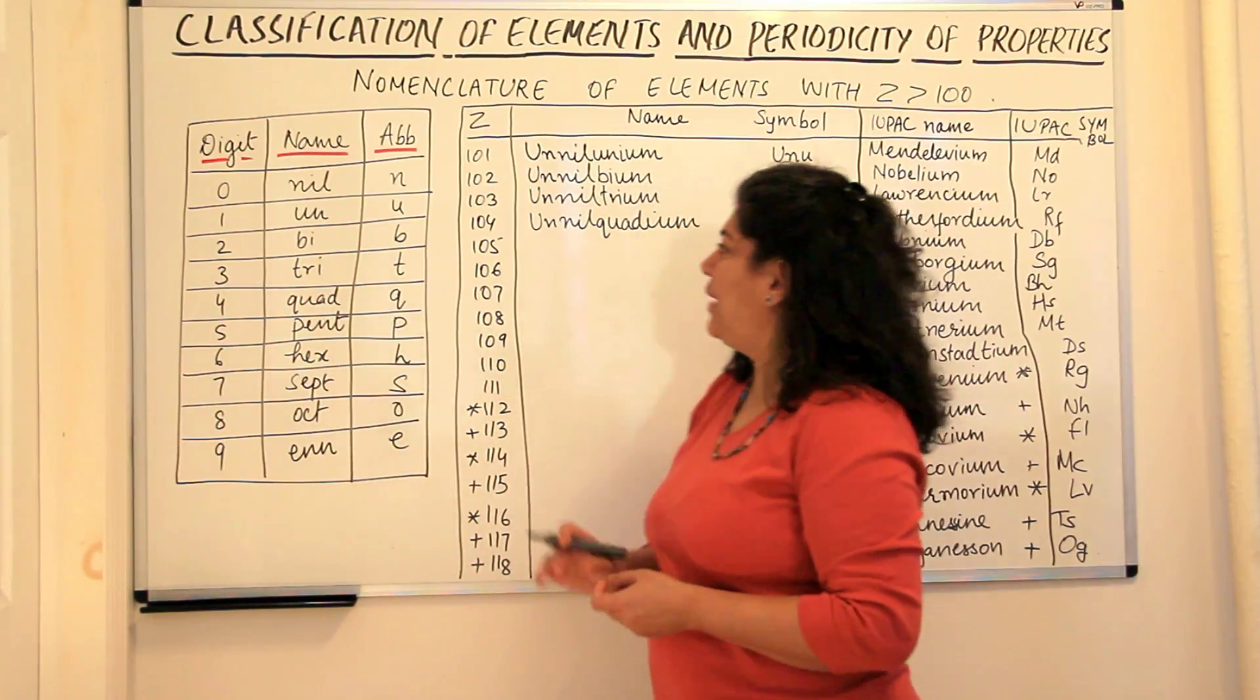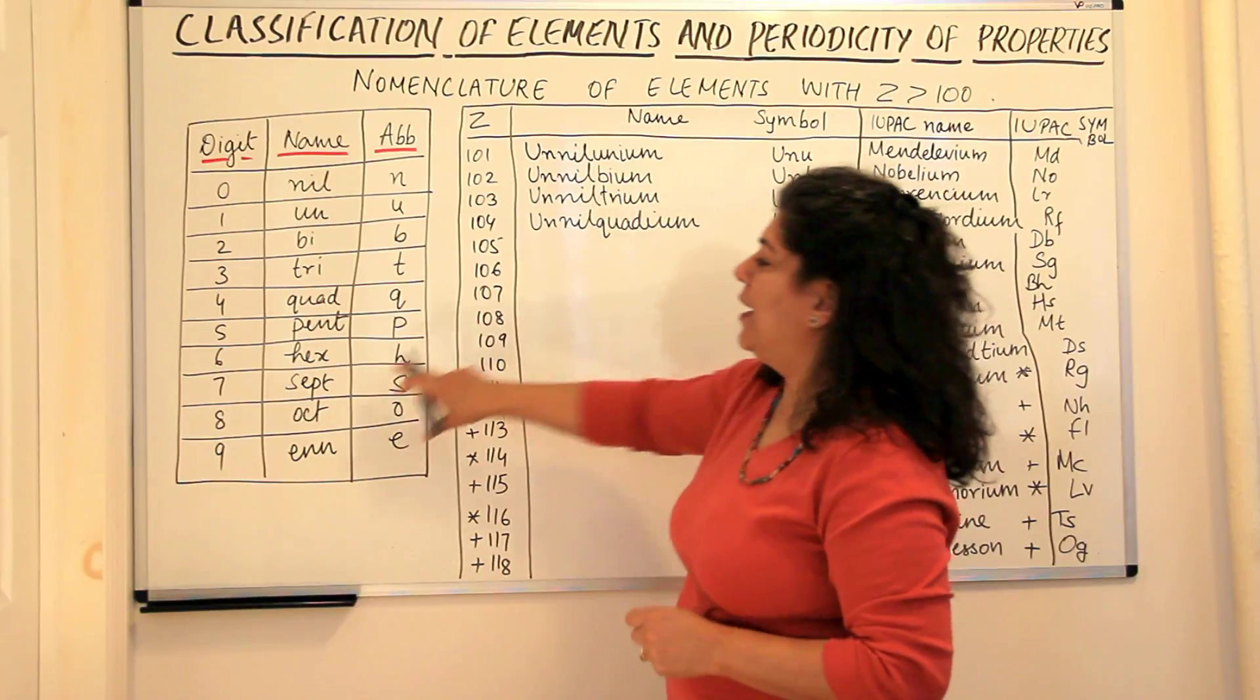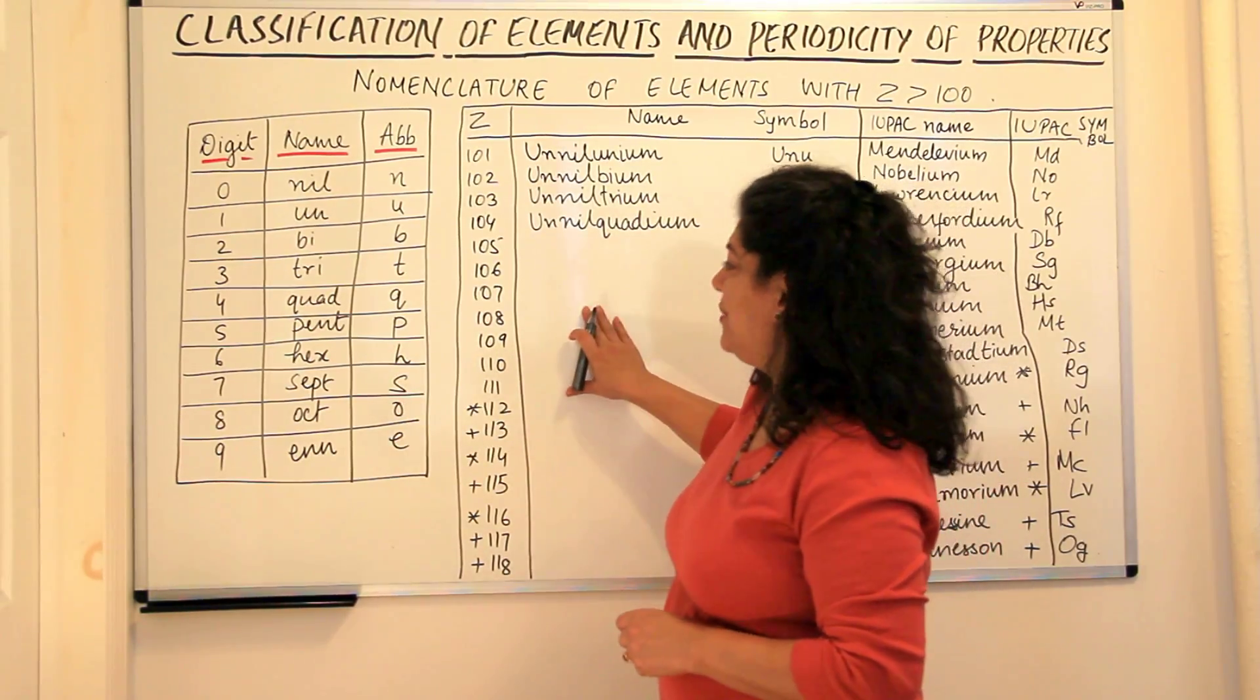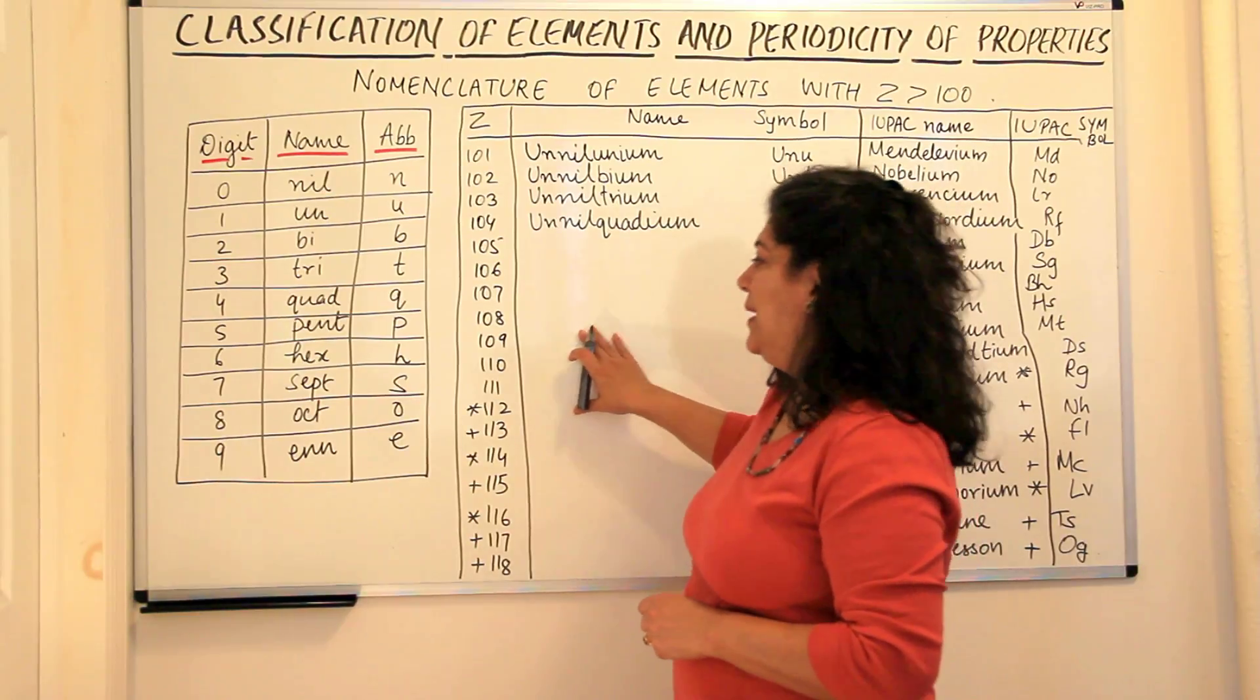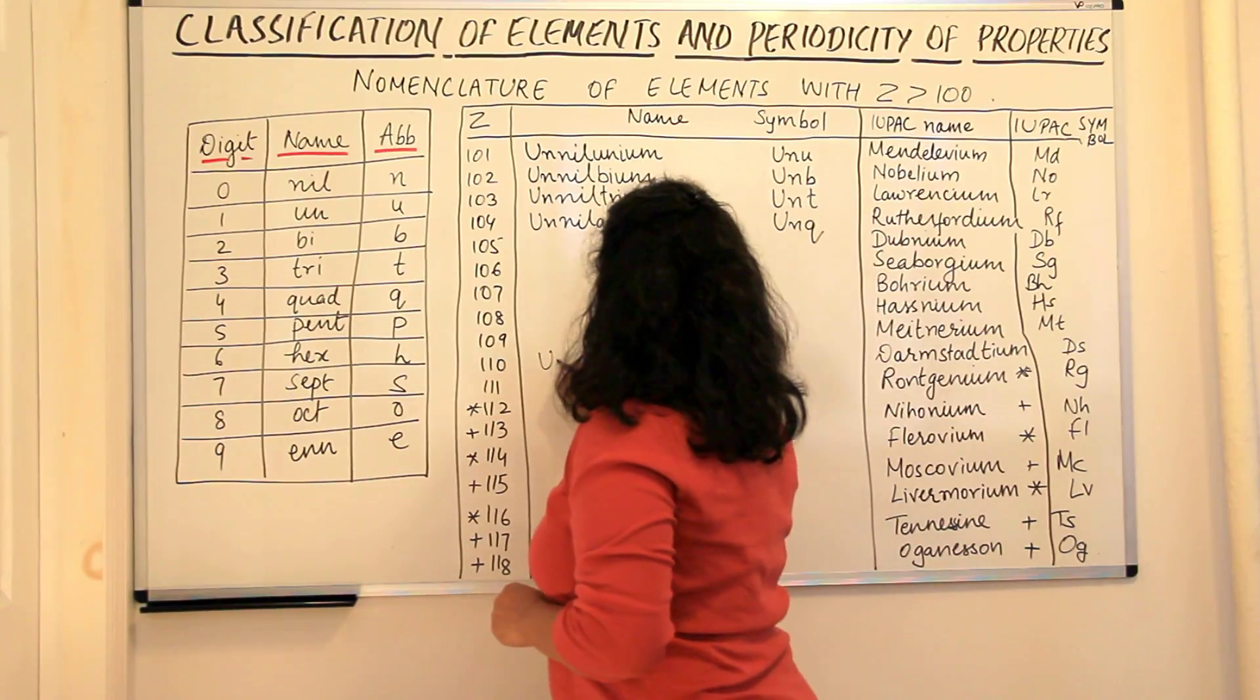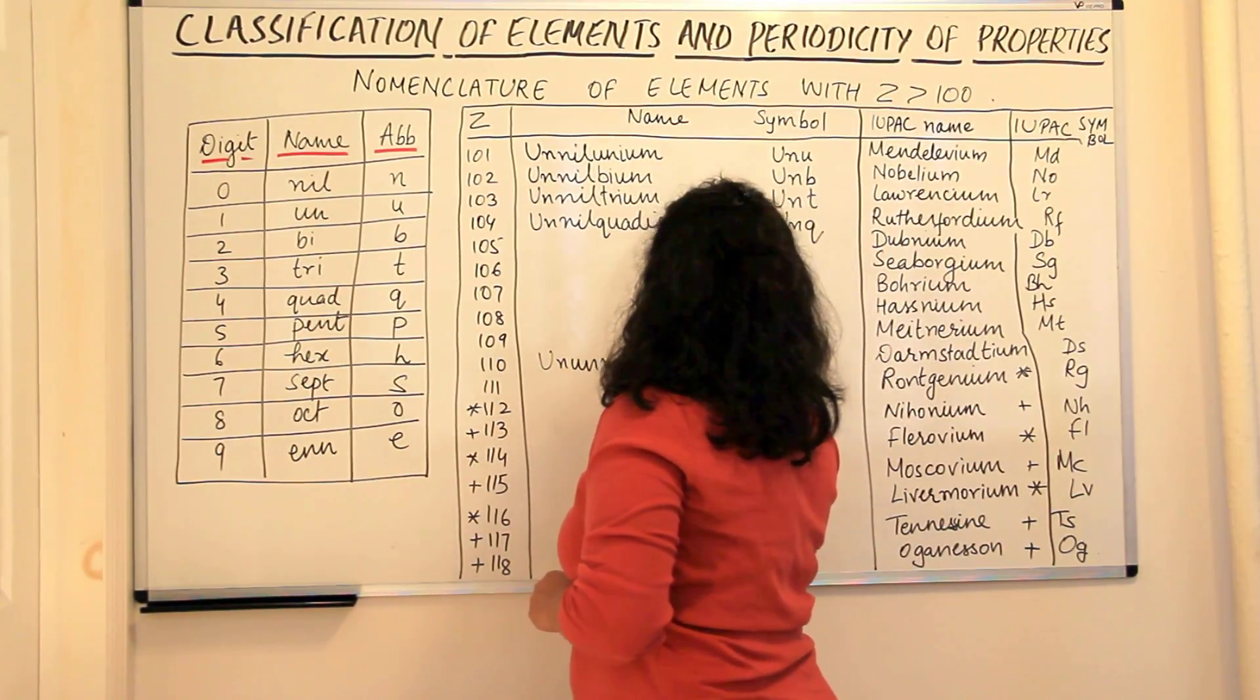And what would 105 be? It would be unnilpentium, unnilhexium, unnilseptium, unniloctium, unnilennium, and ununnnilium. 110 now would be un, un, nil, ium.